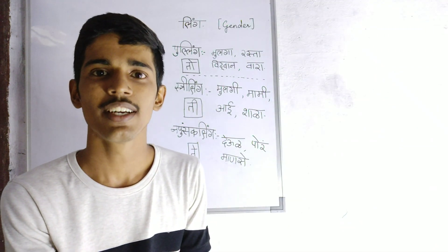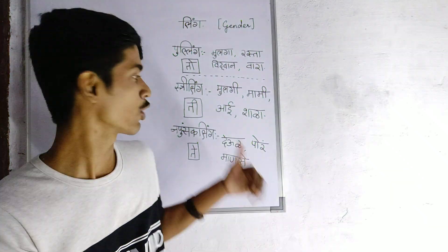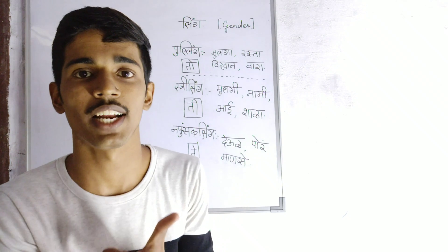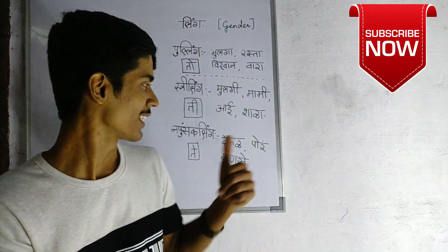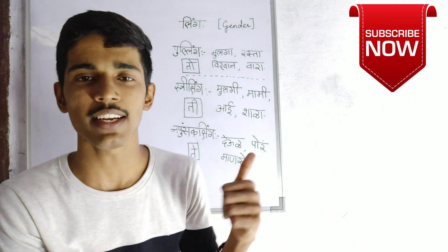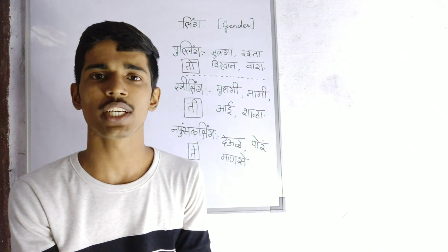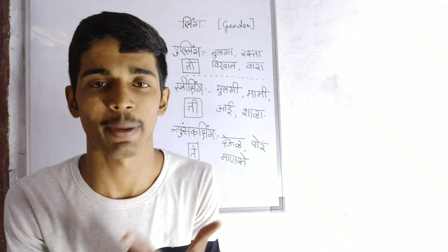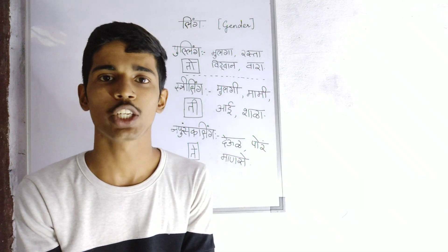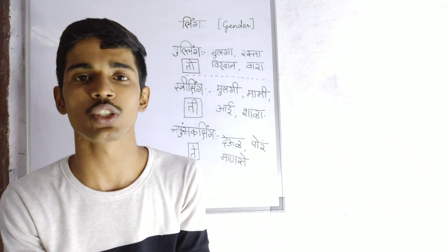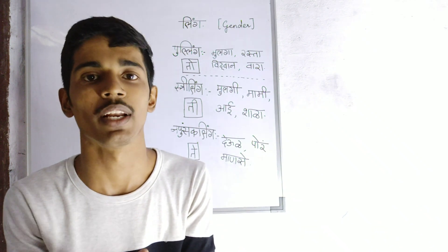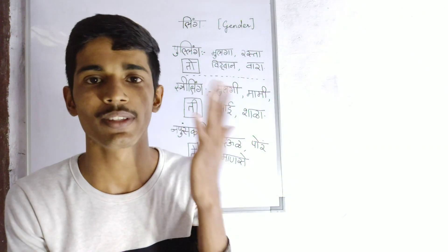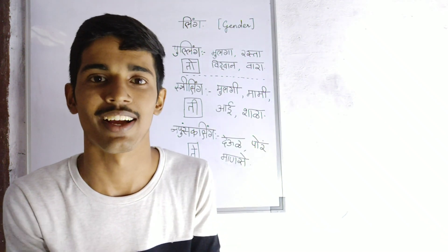Next, for Napusakaling, you use 'te' before the word: te dev, te devar, te porv, te machs. So when you see the Ling, you will be clear on which words to use. Make sure you use these three words — 'to', 'ti', 'te' — before the word and whichever is suitable, use that one.